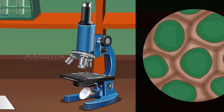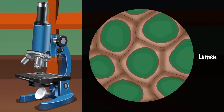Observations: Sclerenchyma tissue consists of thick-walled dead cells. These cells are long, narrow and have hard and extremely thick secondary walls due to uniform distribution of lignin. There are no intercellular spaces between the cells in the sclerenchyma tissue. The cell contains little or no protoplasm. The nucleus is absent in the cell. The cell contains empty vacuoles called lumen.